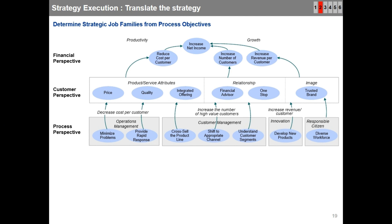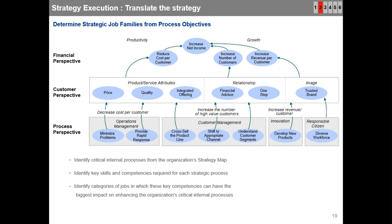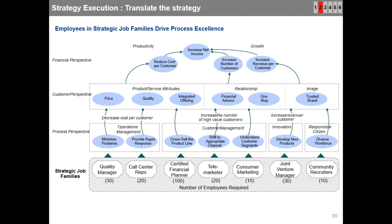The steps for identifying strategic job families are as follows: identify critical internal processes from the organization's strategy map; identify key skills and competencies required for each strategic process; identify categories of jobs where these key competencies can have the biggest impact on enhancing the organization's critical internal processes. The slide shows how employees and strategic job families drive process excellence.